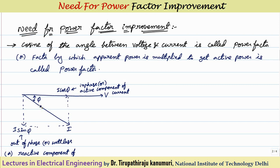Power factor is defined using a phasor diagram. Taking voltage as the reference phasor, since most of our loads are inductive, the current will be lagging behind the voltage by some angle phi. The cosine of the angle subtended between voltage V and the current is called the power factor angle.